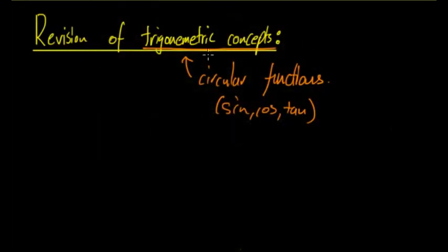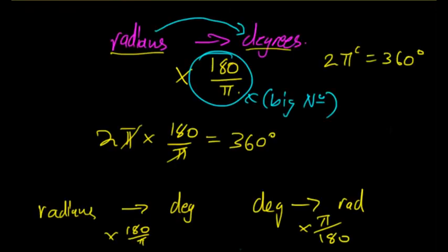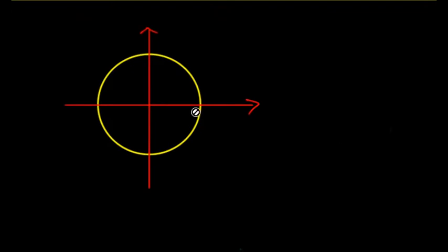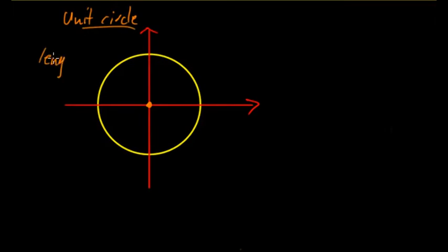In this video we're continuing our revision of trigonometric concepts. We're going to be looking at the unit circle and the trigonometric functions such as sine, cos, and tan. The unit circle is a circle which has radius 1, meaning every point from the center to the circumference has length 1.